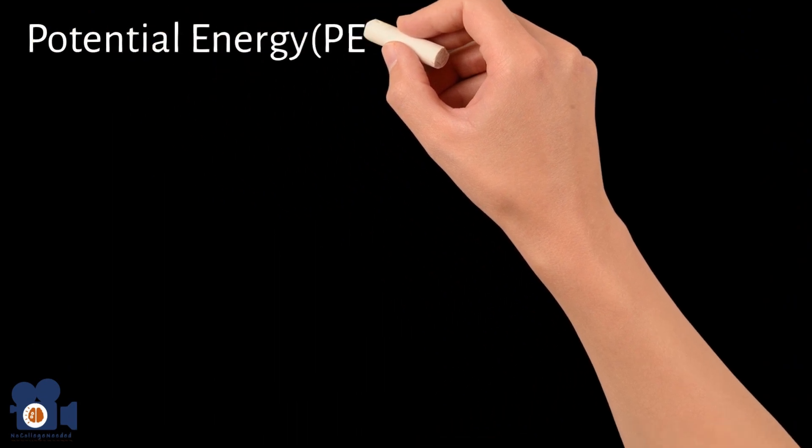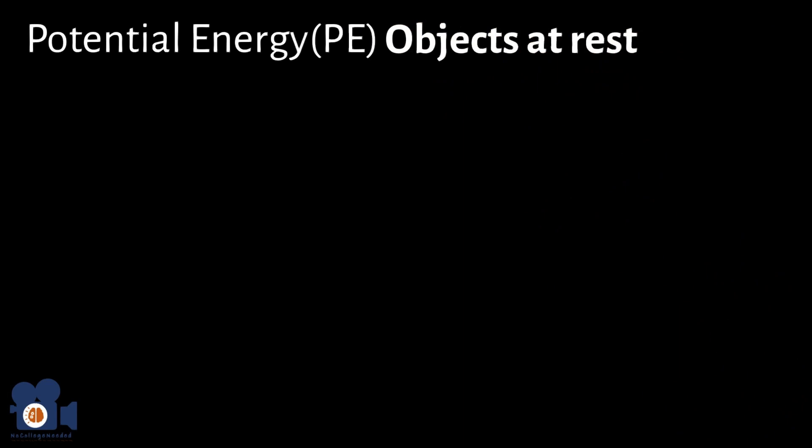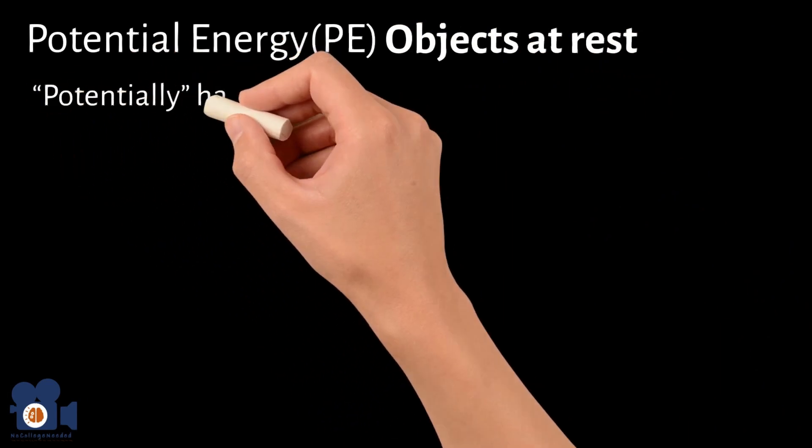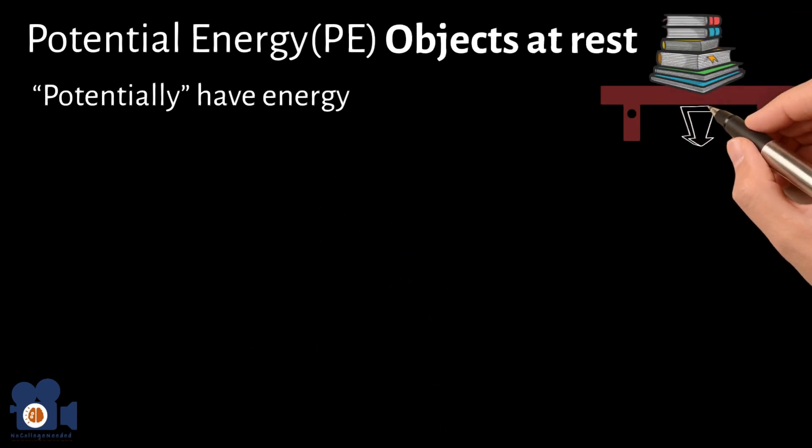Potential energy is almost the opposite of kinetic as it pertains to objects at rest. The best way to think of this is that these objects potentially have energy, such as the book on a shelf. If that shelf breaks, that book is coming down with energy.